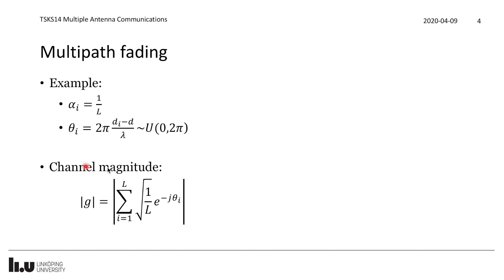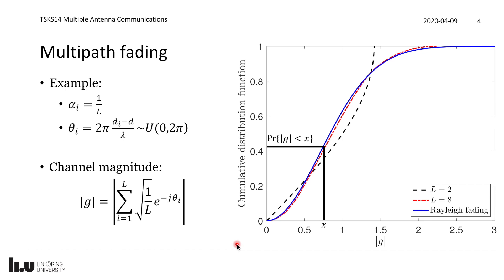Looking at the channel magnitude — the summation over paths of √(1/L) · e^{-jθ_i} — depending on the values of θ_i, these paths either add constructively or cancel out if phases are in opposite directions. We characterize this using the cumulative distribution function of |g|, which on the vertical axis shows the probability that |g| < x for a given x on the horizontal axis. This is essentially the integral of the probability density function.